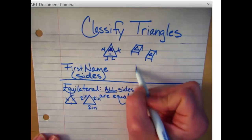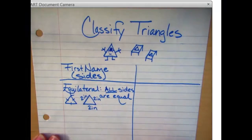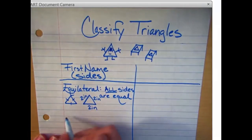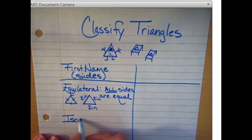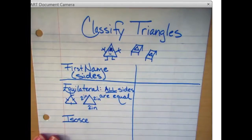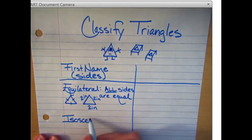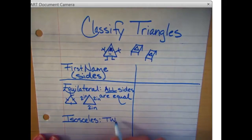Now the second name they give out, a little unusual, his name is Isosceles. Sounds like some sort of Greek mythology character. I always think of Hercules. Isosceles is given his name when he has two, count them, two sides are equal. Only two.